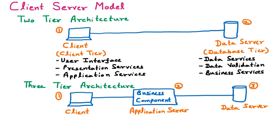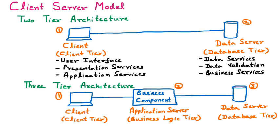In the three-tier architecture, the first tier is the client tier, the second is the business logic tier, and the third is the database tier. The business logic tier is the extra component where all business-related things are handled. The client tier deals with the user interface — how to interact with the user — and presentation services — how to present the website or project to the client.